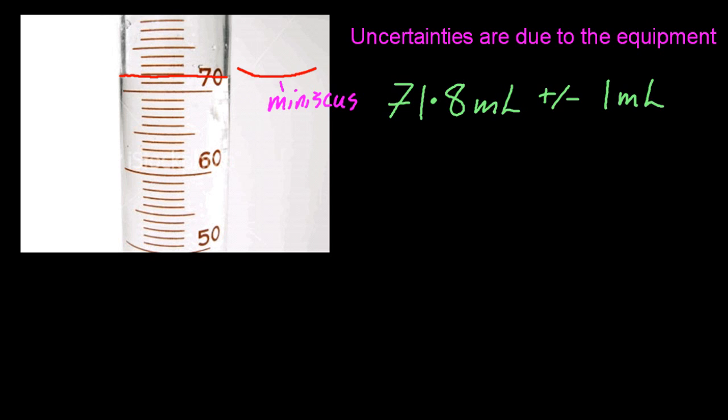And the uncertainty, well, what's the smallest division? I'll draw those there. That's one millilitre. That's the smallest division. And we're going to divide by two because this is an analog device, not a digital one. So the uncertainty is 0.5. You can put the millilitres too if you like.